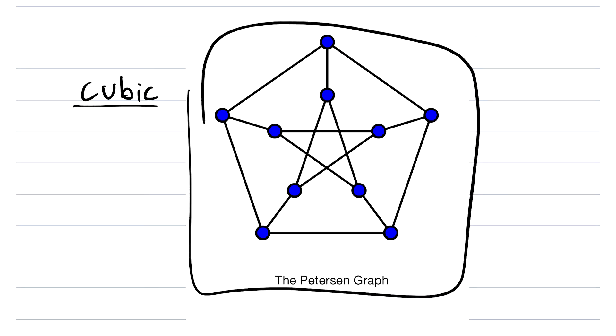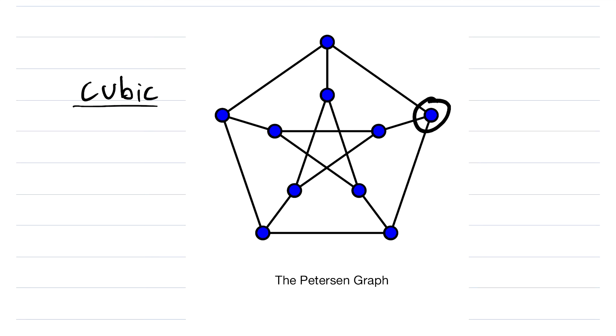So, again, it's cubic because every vertex has degree 3. Let's look at a couple. This vertex over here, for example, is adjacent to one, two, three vertices. So, indeed, it has degree 3. Then if we look at, say, this vertex right over here, it is adjacent to one, two, three vertices also. So, again, it has degree 3.